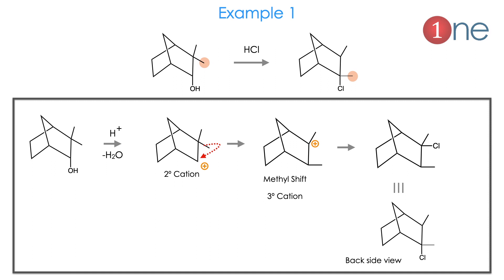The first example has a hydroxyl group in a bicyclic system. The product is converted into an aldehyde but the methyl group has shifted — this is explained by Wagner-Meerwein rearrangement. Starting from the alcohol, Brønsted acid HCl donates H+, water is eliminated, and a secondary cation forms. Since it is secondary and somewhat unstable, the methyl group shifts to form a tertiary cation. Then chlorine attacks the tertiary cation to give the same expected compound. The stable tertiary cation formation is the driving force.